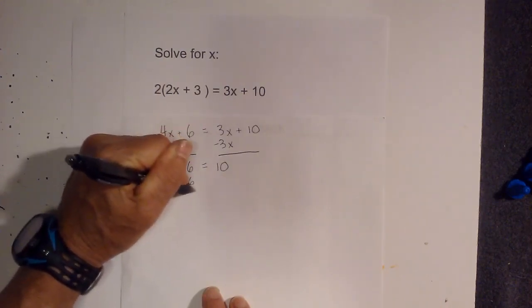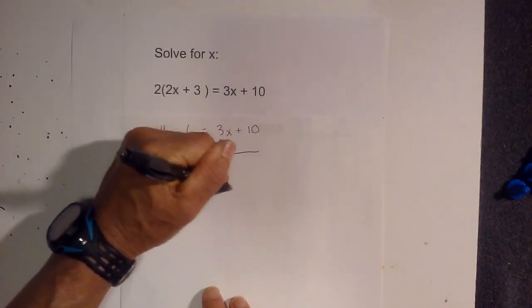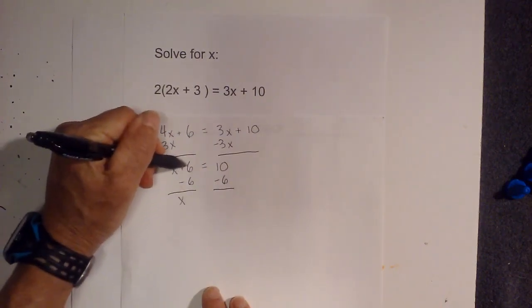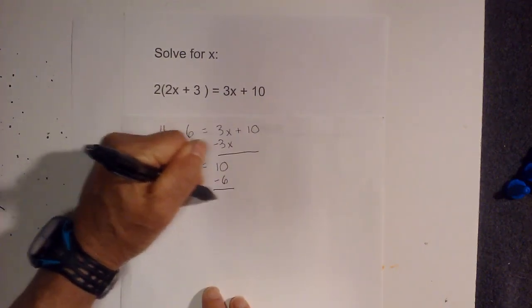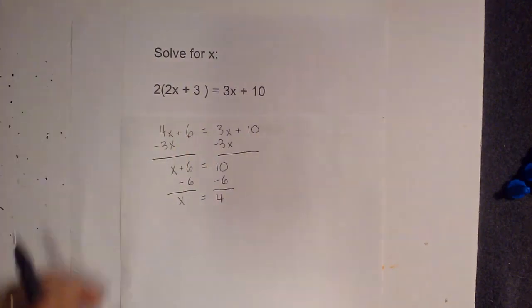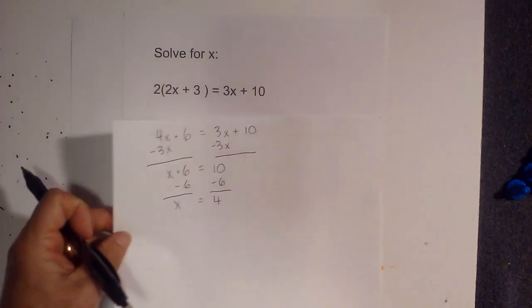So I'm going to subtract 6 from each side and bring down the x. 6 minus 6 is 0, equals 4, so the answer is 4. And now I'm going to check my work.